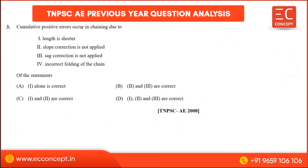Next question: Cumulative positive error occurs in chaining due to — the answer is slope correction not applied and sag correction not applied. The cumulative error is due to slope correction and sag correction. Slope correction and sag correction are always negative.